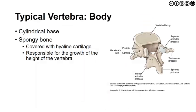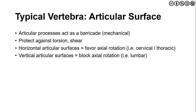The typical vertebral body has a cylindrical base with hard cancellous bone on the outside and more spongy bone centrally. It is covered with hyaline cartilage, which is responsible for the growth of vertebral height. On top of the vertebral body sits the intervertebral disc, which adds height and stability to the spinal column while maintaining the intervertebral space. The articular surfaces act as a mechanical barrier or barricade to excessive torsion or shear forces.